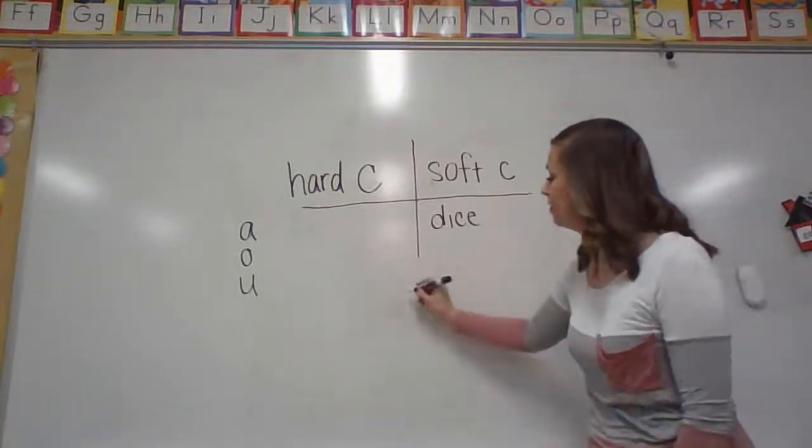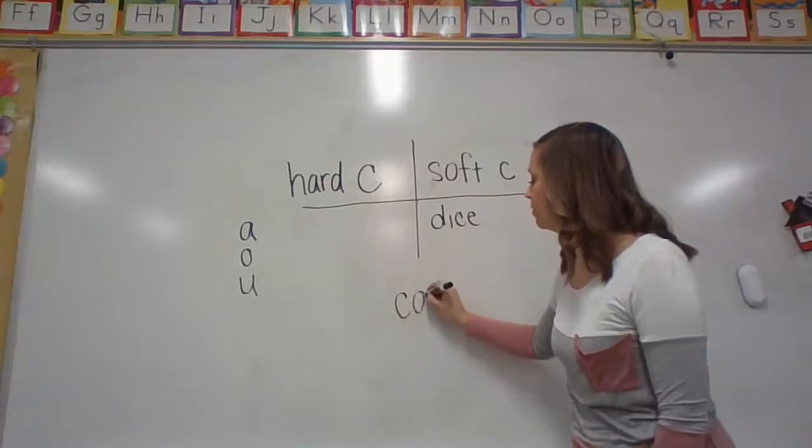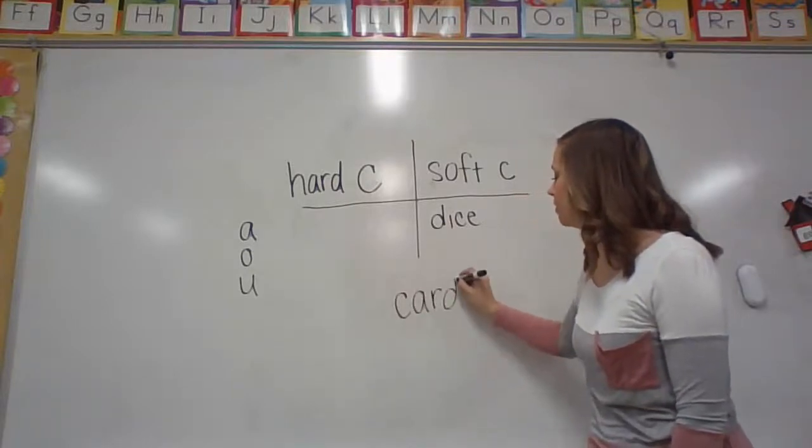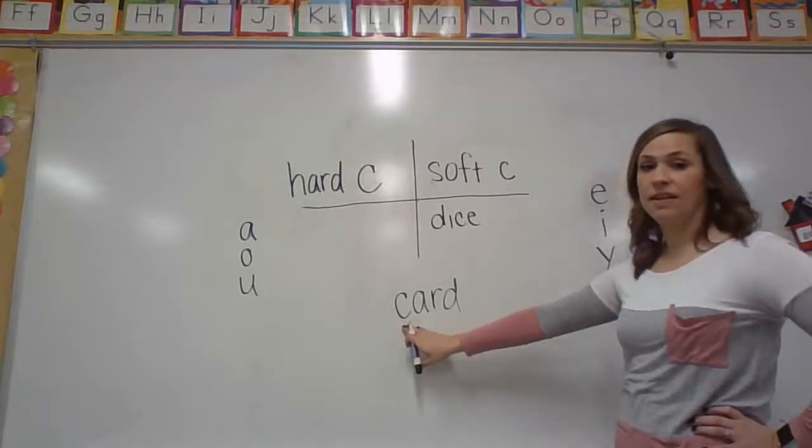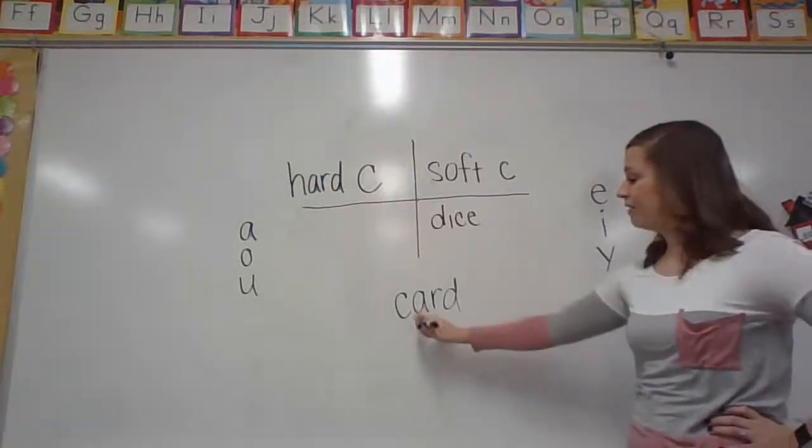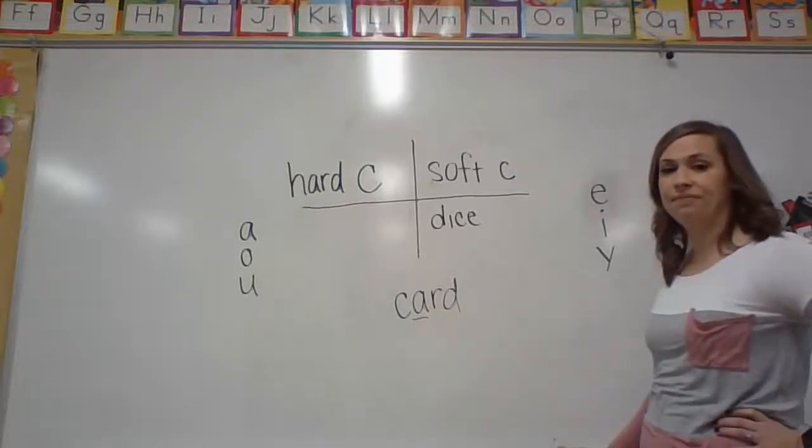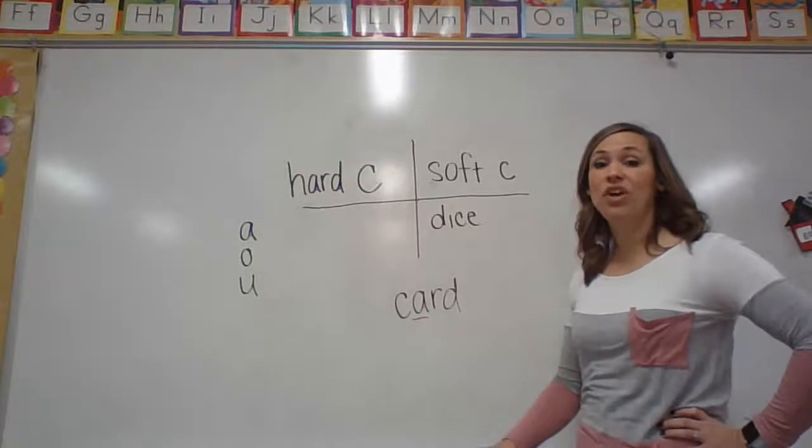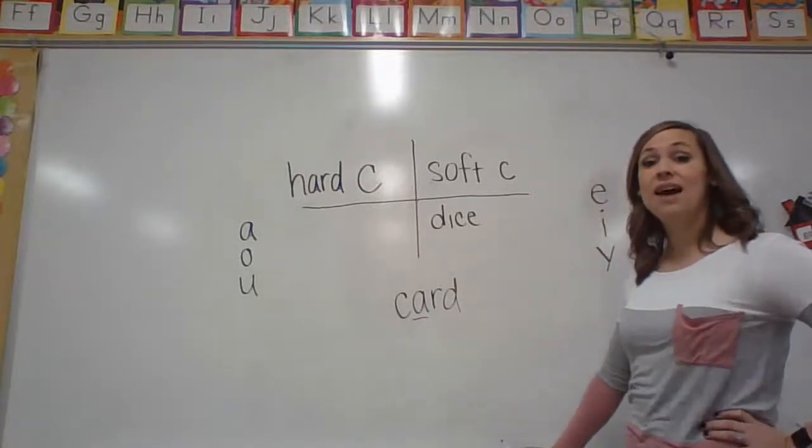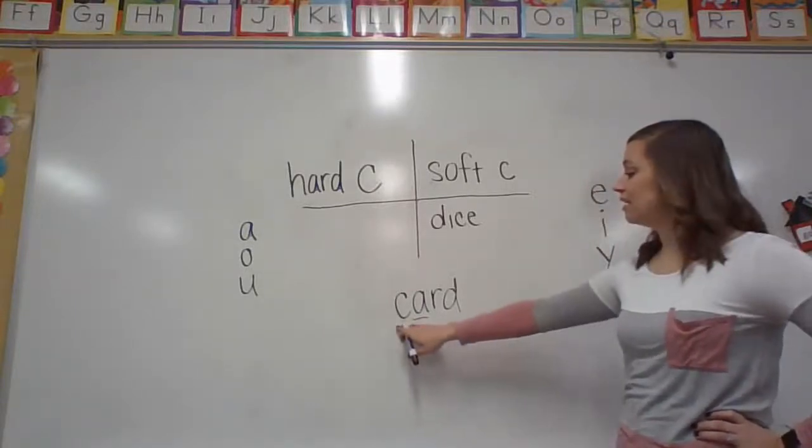All right. Now, what about this word? You find your letter C. What does it have after it? What vowel? It has an A. So this is going to go over here with the hard C. What does hard C say again? K. So this says K.